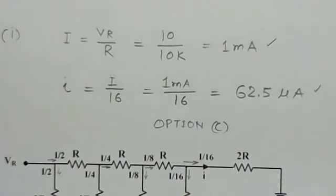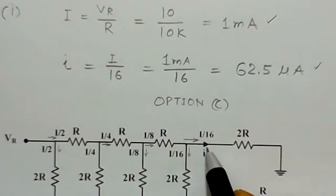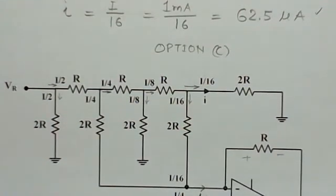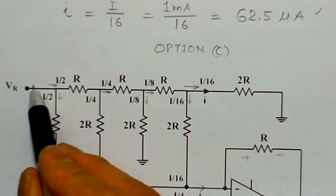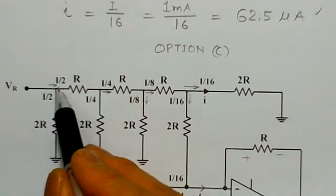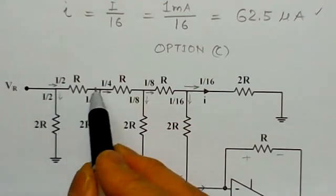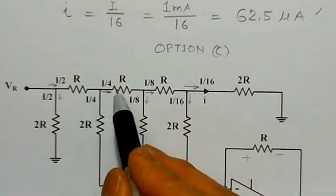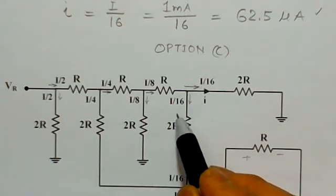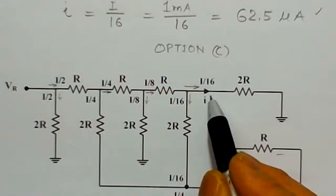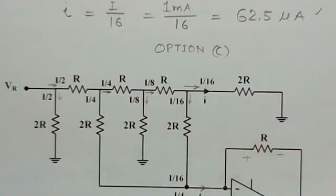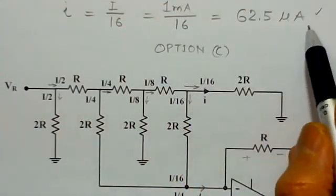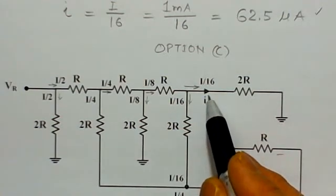We need to determine the current flowing into a specific branch of the network. The current I at the first junction divides equally into I/2 and I/2, because both branches present 2R impedance. At the next junction it divides again into I/4 and I/4, then I/8 and I/8, and finally I/16 and I/16. So the current in the indicated branch is I/16, which is 1 milliampere divided by 16, giving 62.5 microamperes. This is the answer to the first part.